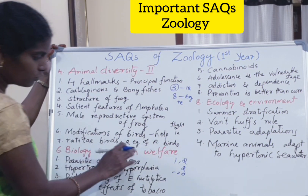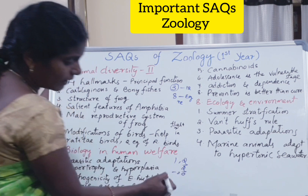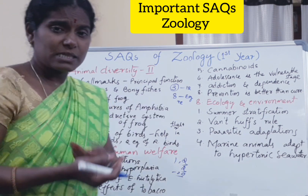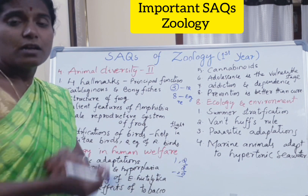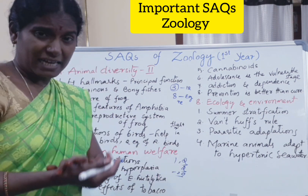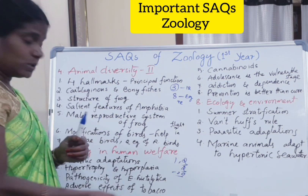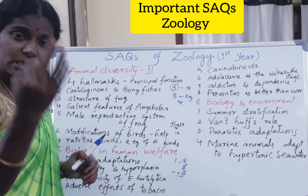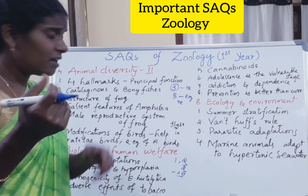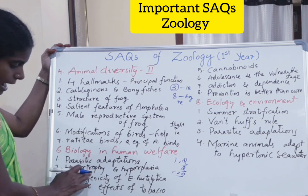Now chapter six, Biology and Human Welfare — a very important chapter. From this chapter: 1 long answer, 2 short answers, and 2 very short answers — total 20 marks. The first short answer question is parasitic adaptations: why parasites need adaptations in the host body — to overcome anti-enzymes and different climatic conditions. These include hooks and suckers, anti-enzymes, cyst formation, and being facultative anaerobes.